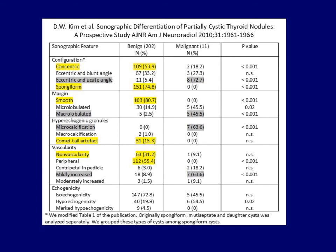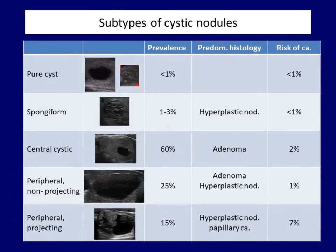It is worth pausing the video to thoroughly analyze the data. One piece of data is worth highlighting: almost half — five out of 11 cancers — occurred in iso-hyper-echoic nodules. This ratio is significantly lower in dominantly solid nodules. The following table summarizes the most important subtypes of cystic nodules, giving their prevalence and the risk of cancer in the various subtypes.